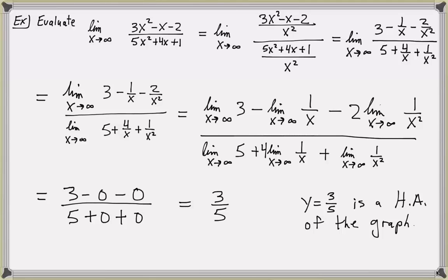Notice that if I replace infinity by negative infinity, the limit would still equal 3 fifths, because the limit of 1 over a power of x — 1 over x, 1 over x squared — these limits would also equal 0 if x is approaching negative infinity. So to the left, the graph of the function would also be approaching height 3 fifths.